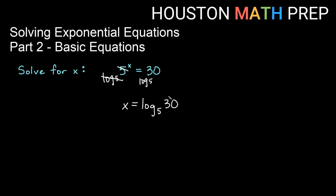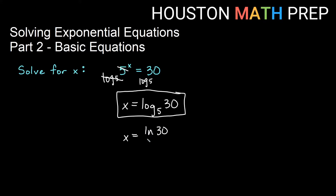That is an exact answer. If we were looking for a decimal approximation, we could type this in the calculator. You might not have a log base 5 button, so we can use the change of base formula. We can change this to natural log: natural log of 30 over natural log of 5. Typing that in with the ln button, we get approximately 2.113 rounded to three places.